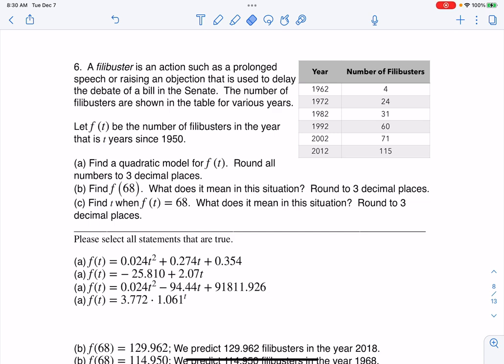Hey everyone, let's take a look at our next multiple answer question. Here we have that a filibuster is an action such as a prolonged speech or raising an objection that is used to delay the debate of a bill in the Senate. The number of filibusters are shown in the table for various years.